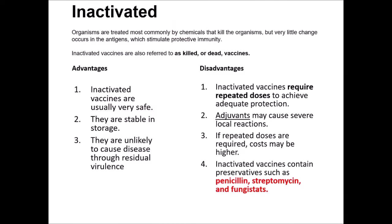Usually these vaccines require repeated doses to achieve adequate protection, and those repeated doses will vary in the length of time between which we give them. They often have something called adjuvants — these are added to the vaccine to allow them to get to the tissue, because these are not living viruses so we need to get them to the right place throughout the body. These adjuvants are what can cause a severe local reaction. So if you're giving rabies to a dog, it's likely that they're going to be painful at the site of injection for a couple of days, or may have some alopecia or hair loss at that site. If repeated doses are required, costs could be higher, though that's not true for rabies.